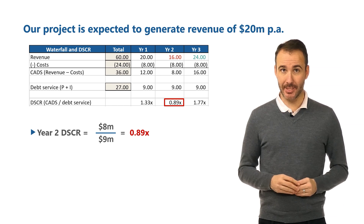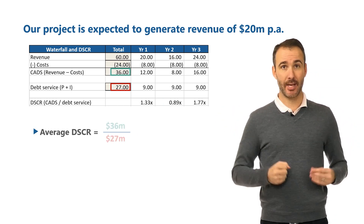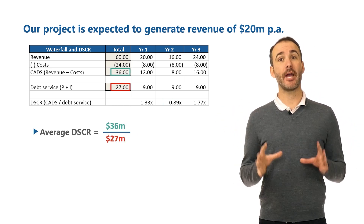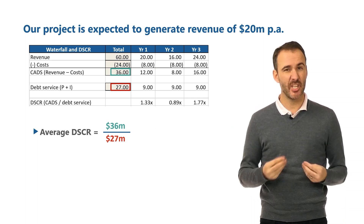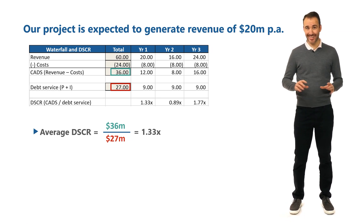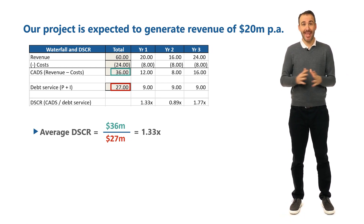Our average DSCR is the total CADS of $36 million divided by total debt service of $27 million, which equals 1.33x. The average DSCR is exactly where we want it to be — so everything's great, right? No, sorry. If the project can't pay its debt in any given year, it's in default.